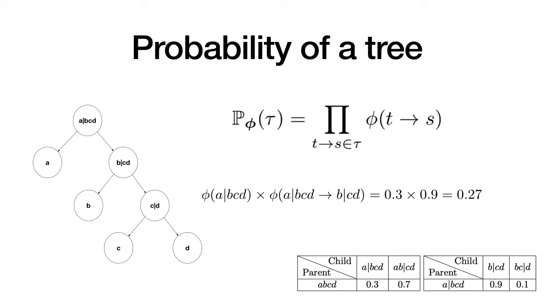Equipped with the conditional probability table, we can evaluate the probability of any tree by taking the product of the subsplit parameters for each PCSP that appear in the tree. In this example, this tree has probability of 0.27 given by the probability of 0.3 for the root split, and 0.9 for the subsplit of B from CD. We can in fact compute the probability of any subsplit as well as partially specified trees.